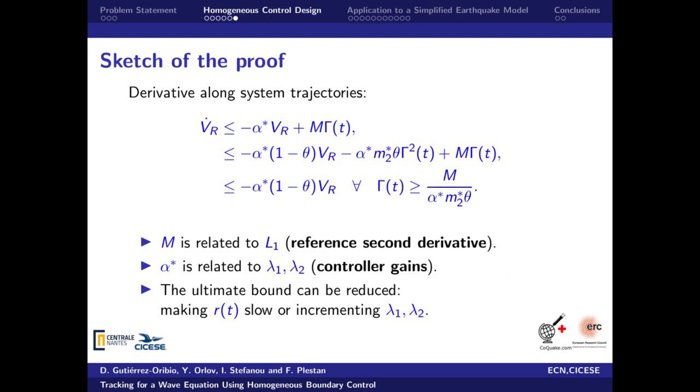As a second step, we take the derivative along the error system trajectories. We can show that there exist two terms on it. One is negative definite and the other depends on the input R double dot. By using some algebraic steps, the ISS can be derived, where the ultimate bound depends on the L1 bound related to the reference and on the control gains. This shows how the ISS result can be improved by selecting correctly the reference or the control gains as much as the application requires.